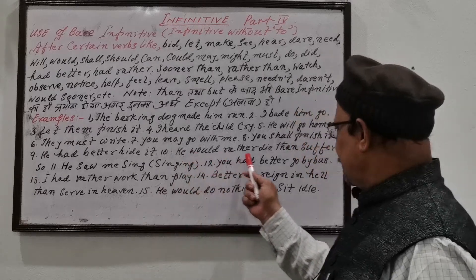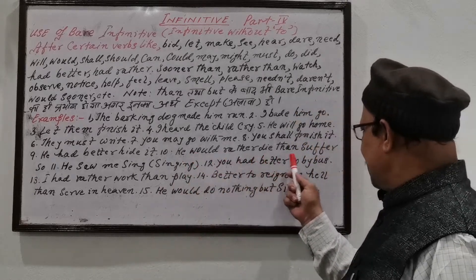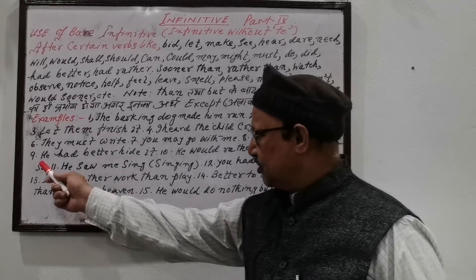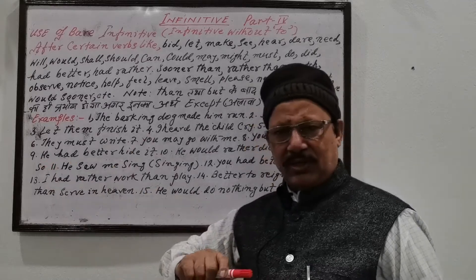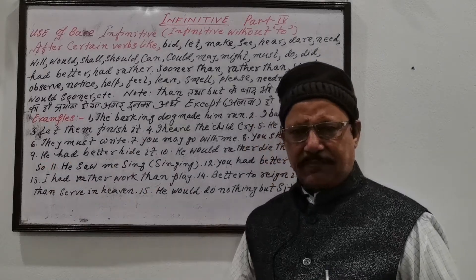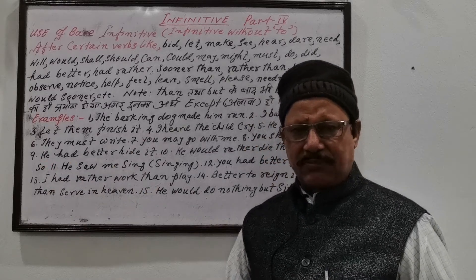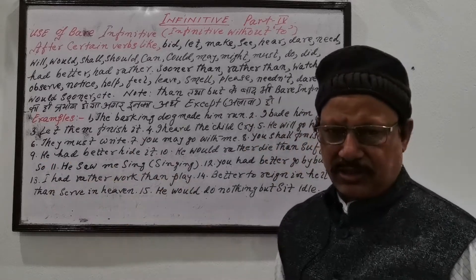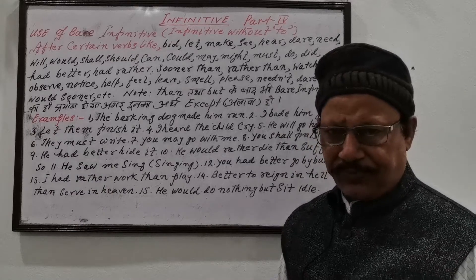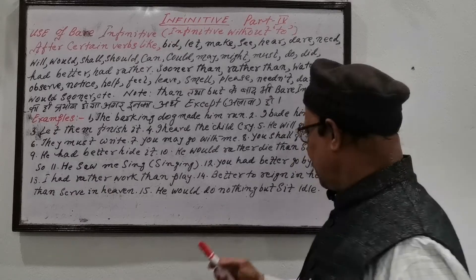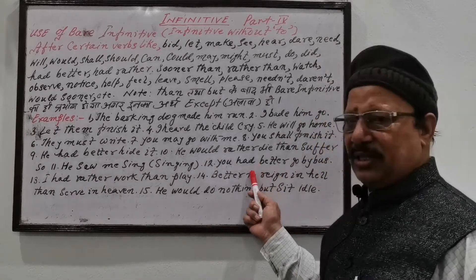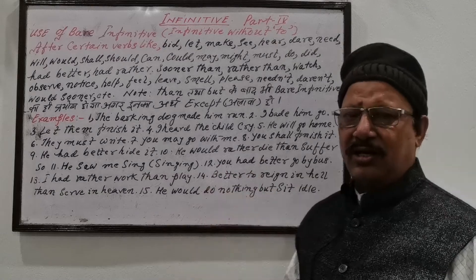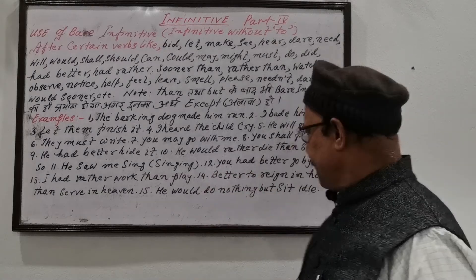'He would rather die than suffer.' — He prefers death to suffering in this way. Notice how complex this sentence is in Hindi/Urdu, yet how easily it is expressed in English. This is 'would rather' and 'had rather'.